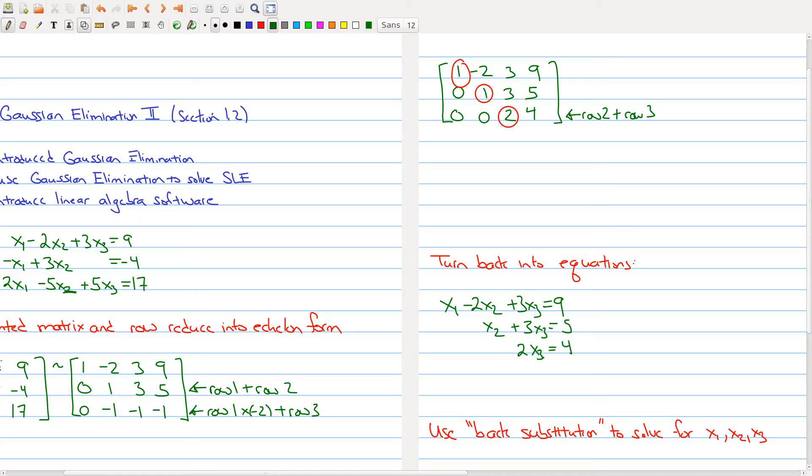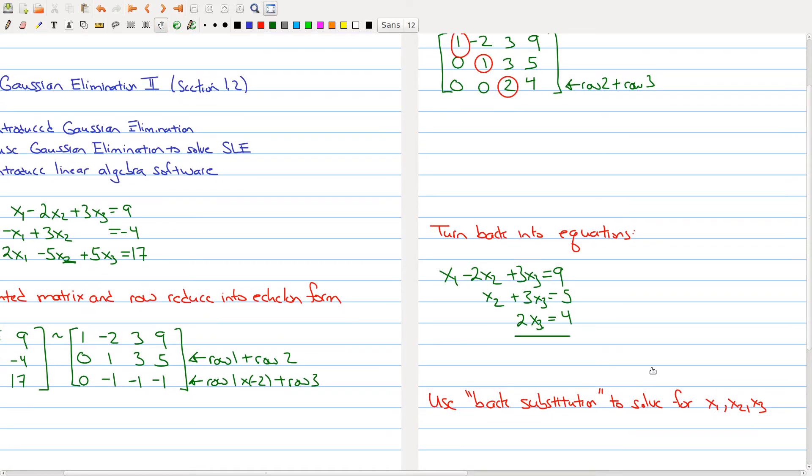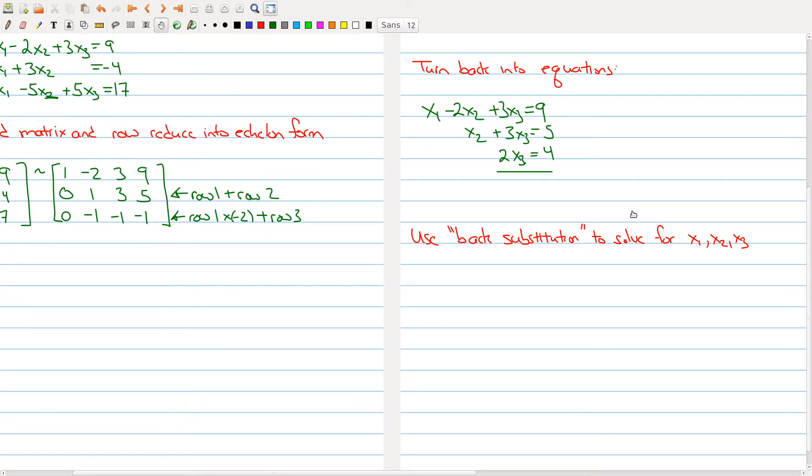So you'll notice that what happens when we put things into echelon form is we're getting at the bottom equations with the fewest number of variables, and then above it we'll get an equation with more variables, and then we'll get an equation with more variables after that. And hopefully, after you put everything into row reduction form, you'll get an equation like this at the bottom that's very easy to solve. And we can use a procedure called back substitution in order to solve for x1, x2, and x3. So let me make this a little bit clearer. Let's give all of these equations numbers so we can keep track of them.